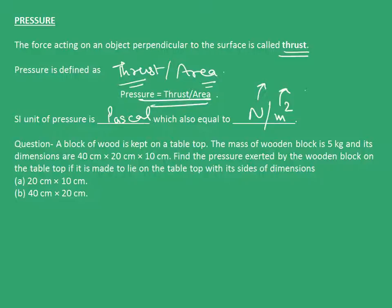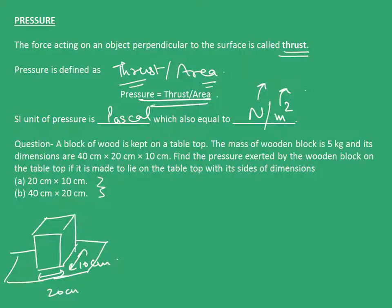We have to find the pressure exerted by the wooden block on the table if it is made to lie on the table top with the following dimensions. We'll see it pictorially. The first situation says the object kept on the table has dimensions 20 cm and 10 cm. The force acting downward will be the weight.